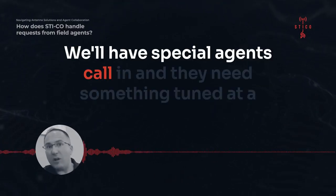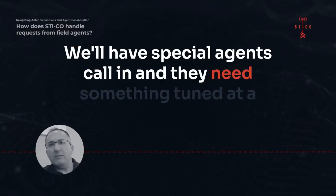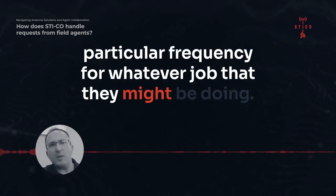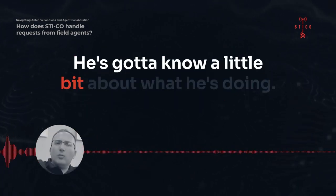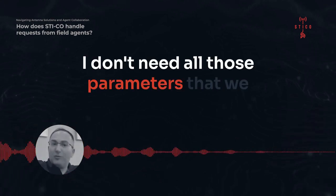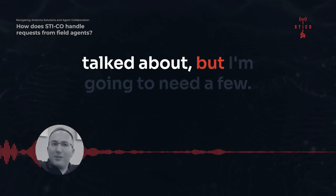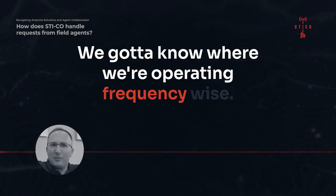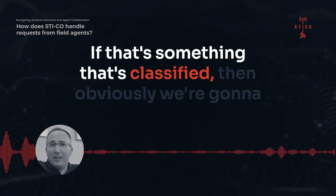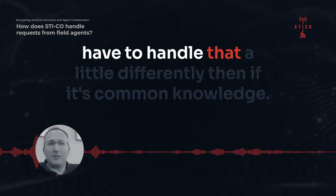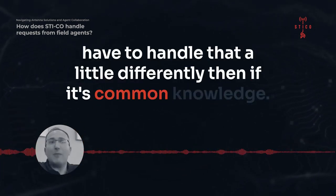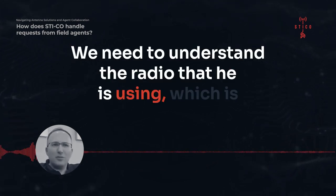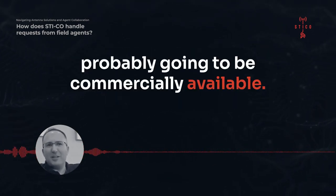We'll have special agents call in and they need something tuned at a particular frequency for whatever job they might be doing. He's got to know a little bit about what he's doing. I don't need all those parameters that we talked about, but I'm going to need a few. We've got to know where we're operating frequency-wise, and if that's something that's classified, we're going to have to handle that a little differently. We need to understand the radio that he's using, which is probably going to be commercially available.